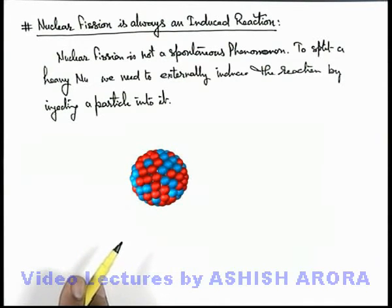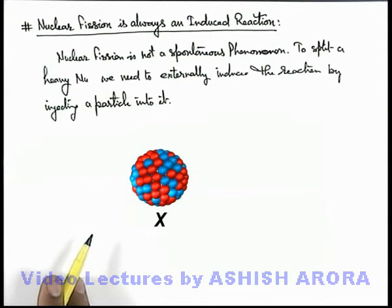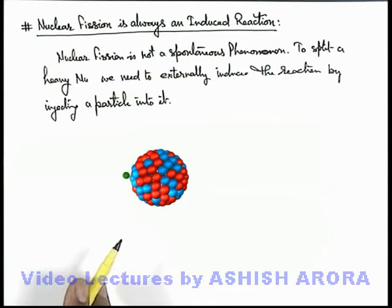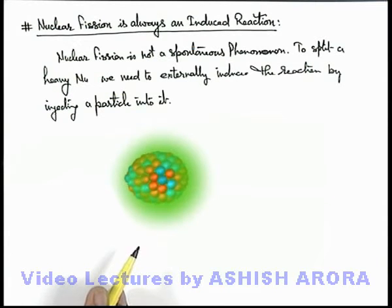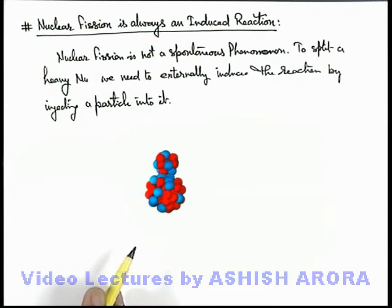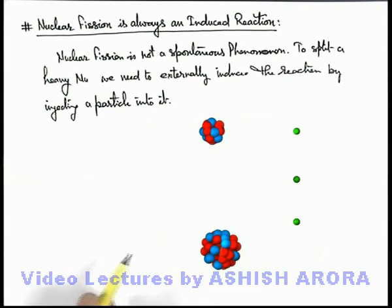Like you can see in this realistic situation: we are given a nucleus X, into which when externally a neutron is fired with some kinetic energy — in various cases the value of kinetic energy may be more or less — as soon as it is injected into the nucleus, the nucleus becomes unstable. After a very short duration, due to imbalance of internal forces caused by injection of this neutron, the nucleus splits into 2 middle weight fragments and few neutrons are also emitted in the surrounding.